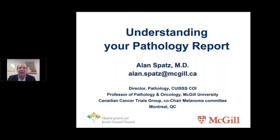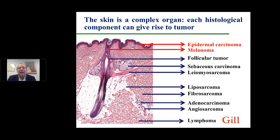I look forward to the Q&A session at the end of this presentation. This is totally focused on skin. The skin is a very complex organ, and because of this complexity, it's important to have some view on the histological organization of skin — meaning the tissue organization — because each component can give rise to tumors.